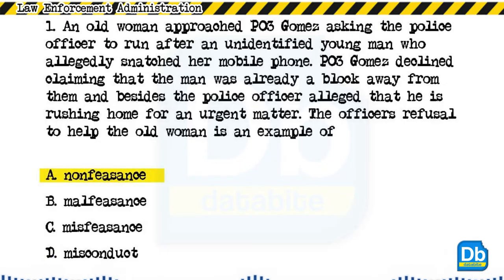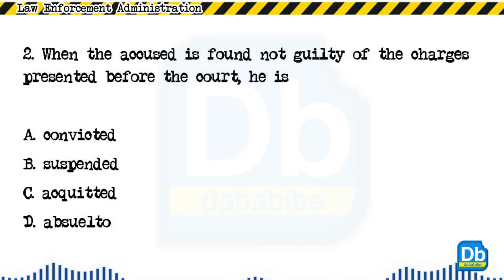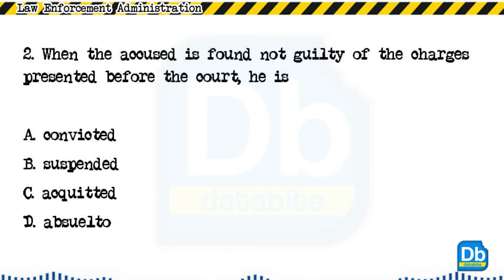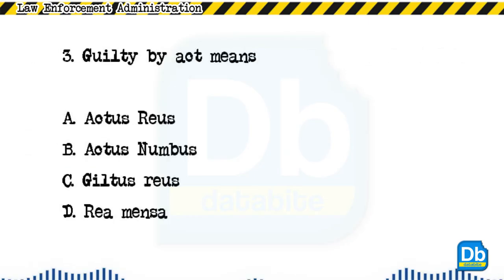The answer is A, non-feasance. Question 2: When the accused is found not guilty of the charges presented before the court, he is: a) convicted, b) suspended, c) acquitted, d) absuelto. The answer is C, acquitted.